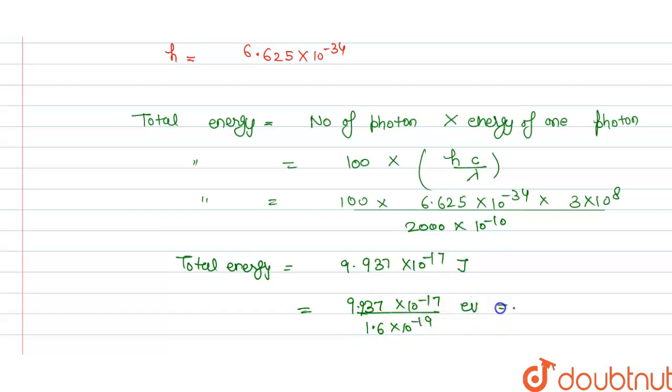So now it is in electron volt and this will equal to 621.1 electron volt and this is our total energy for the 100 photons. So this is our answer. Thank you.